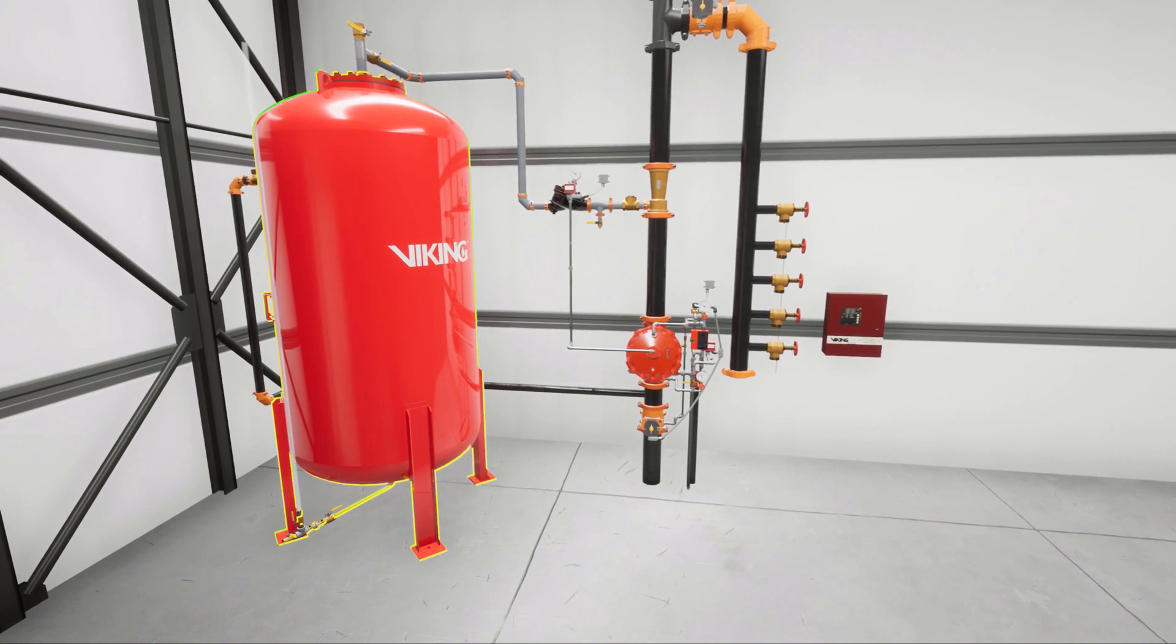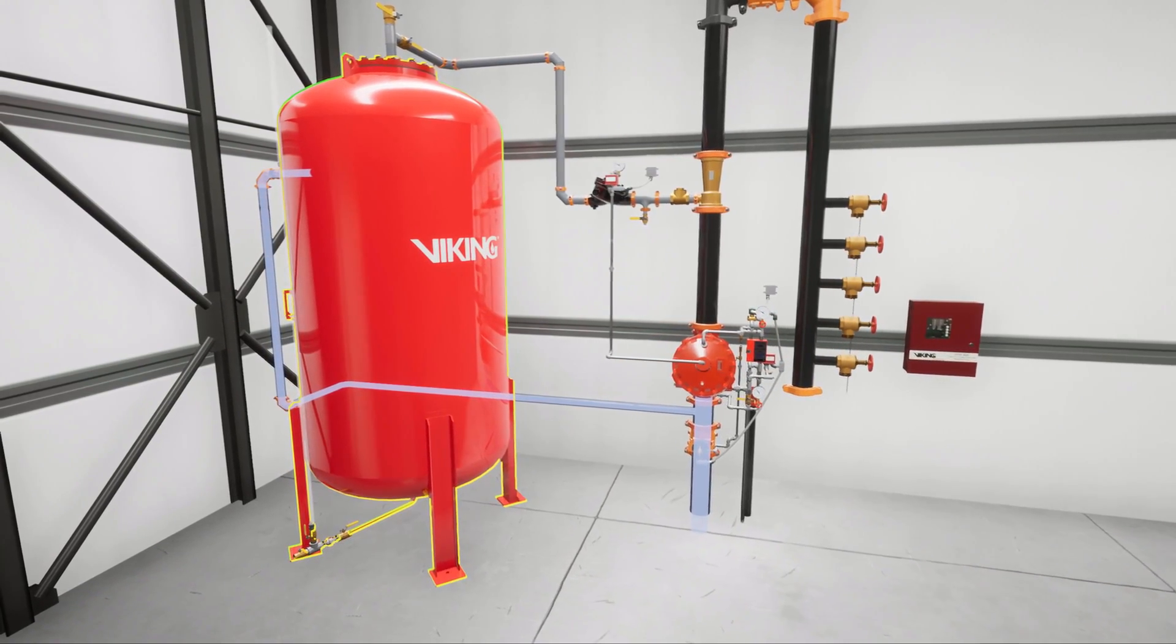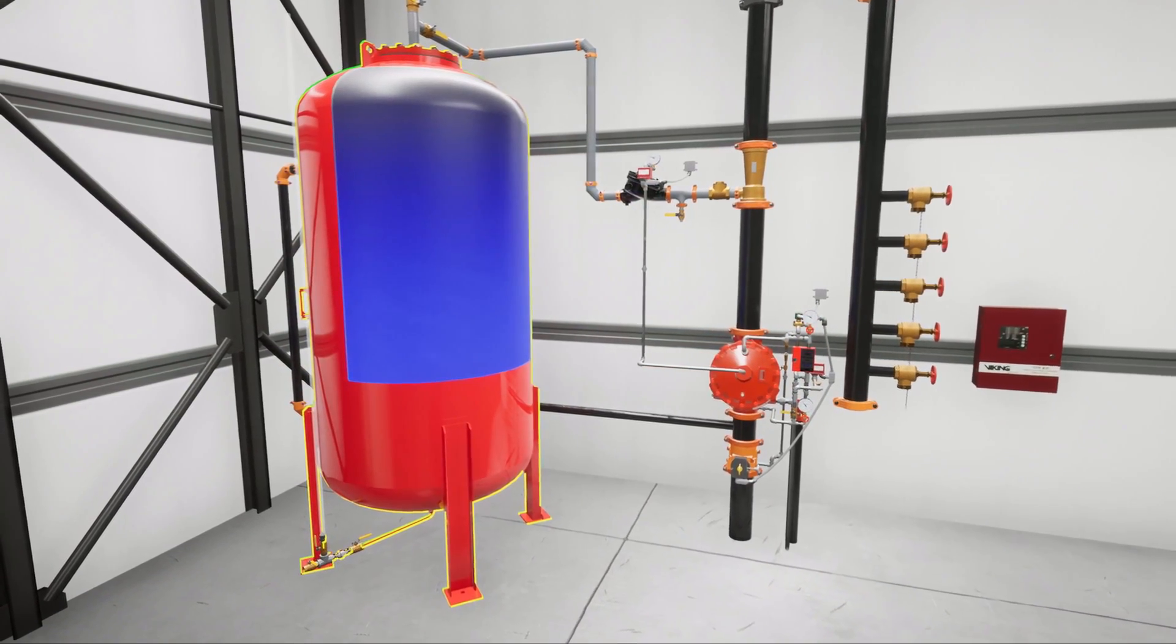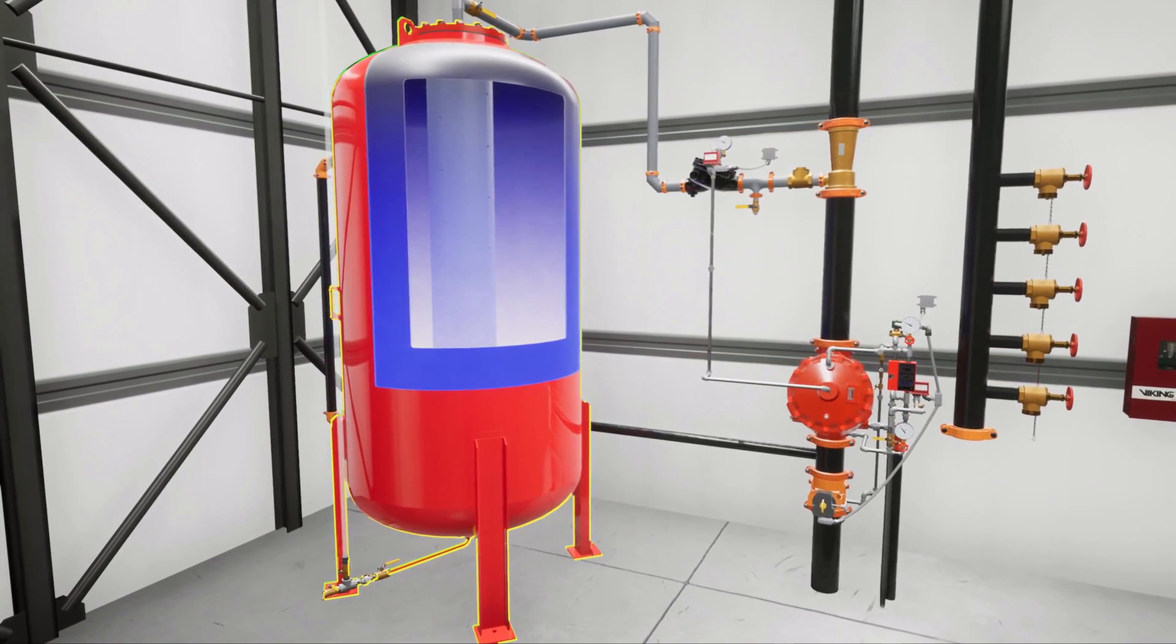A bladder tank is a device that is continually pressurized by the main water supply. The water sits between the steel shell and the rubber bladder. The bladder is filled with a foam concentrate.